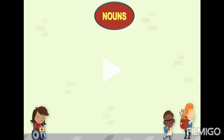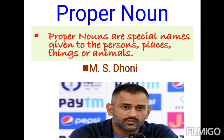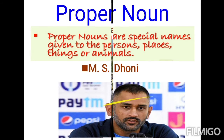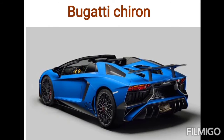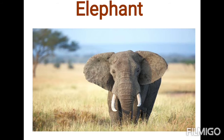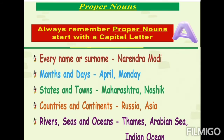Let's see about proper nouns. Proper nouns are special names given to persons, places, things, or animals. For example, the name M. S. Antony is given to a specific person — this is a proper noun. The name Salem is given to a specific city. Bugatti Chiron is the name given to a specific car. The name elephant is given to a specific animal.